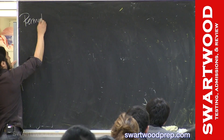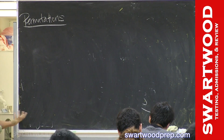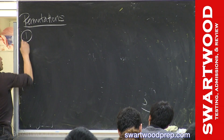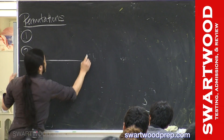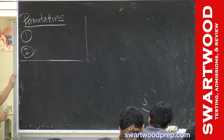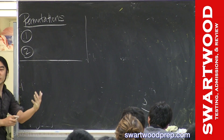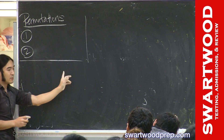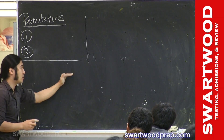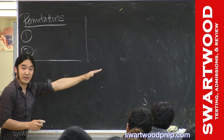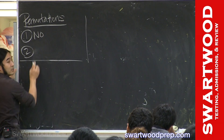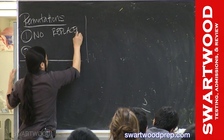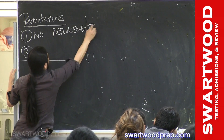Let's do permutations. You need two things for permutations. Number one: there's no replacement — once you use a person, you can't use them again. In the previous problem you could reuse choices, like alcohol, alcohol, drugs, alcohol. Here we're going to make sure we don't repeat. No repeats means no replacement — these are the situations where we use permutations.